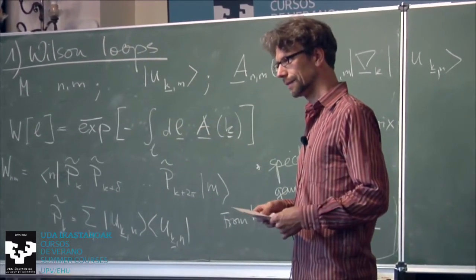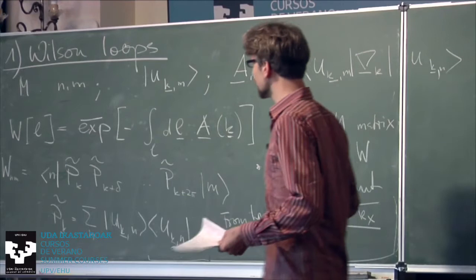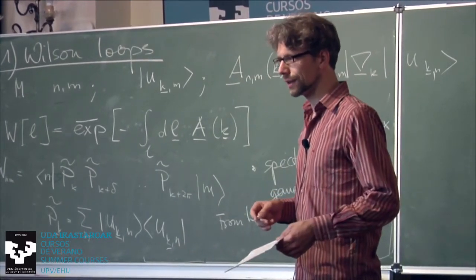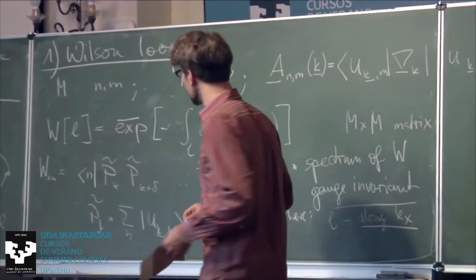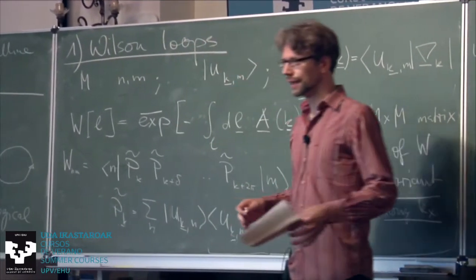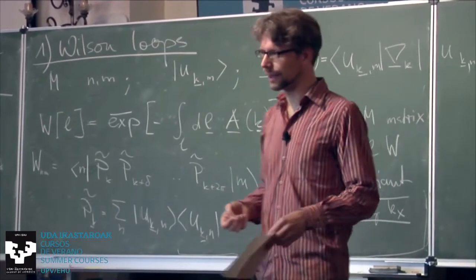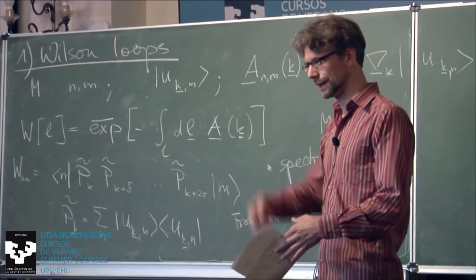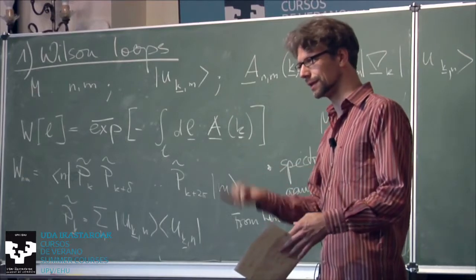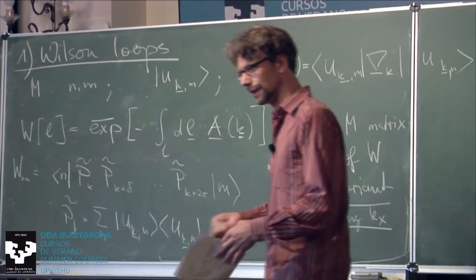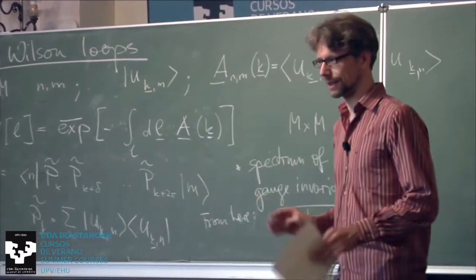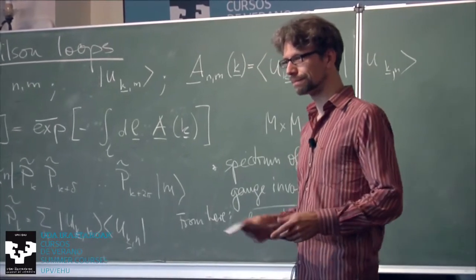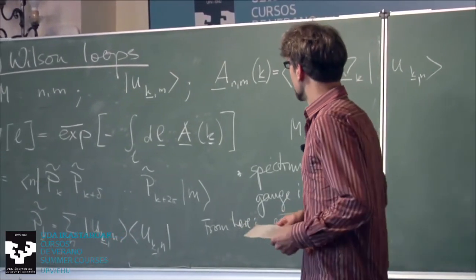The bands have different energies, but that's mostly irrelevant from the point of view of topology. We think of an insulator as dividing our single-particle Hilbert space into occupied and empty parts. The detailed energetics in the occupied part is basically irrelevant — everything is occupied, so it's the same for us.